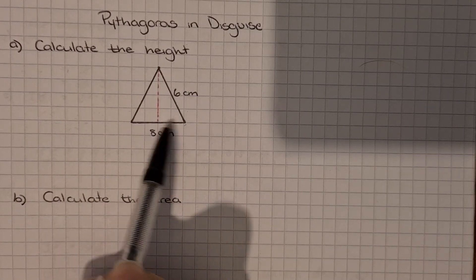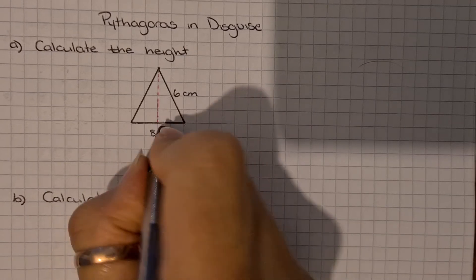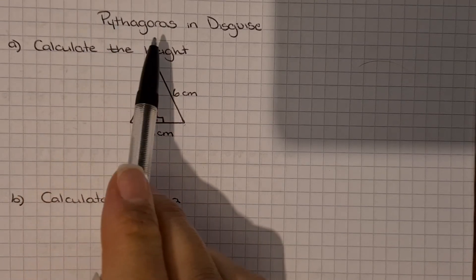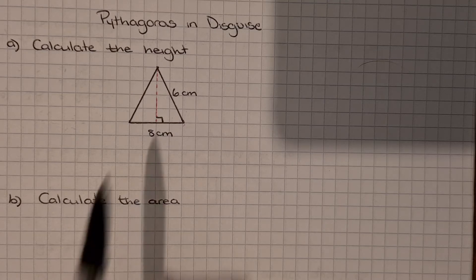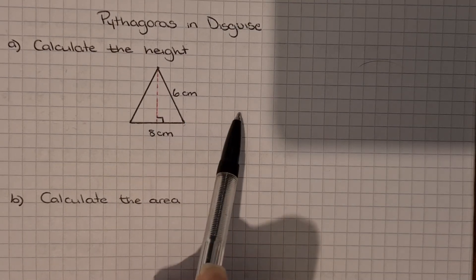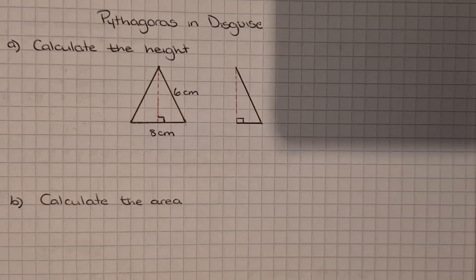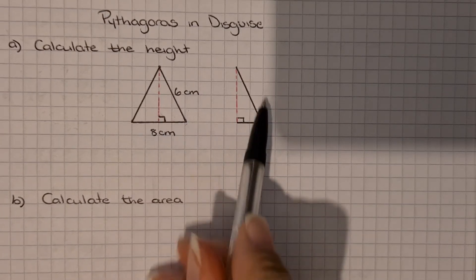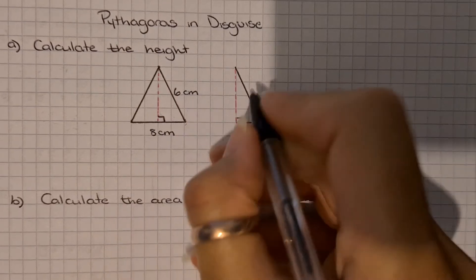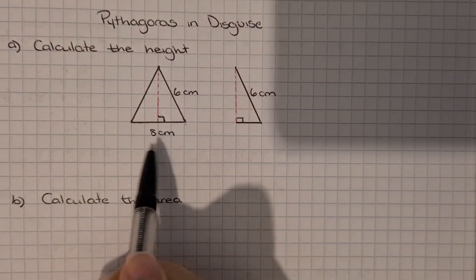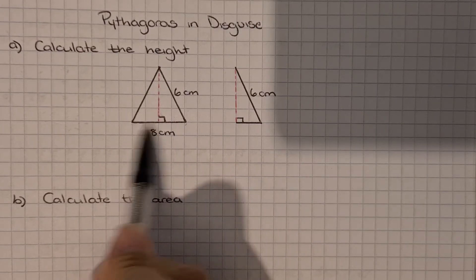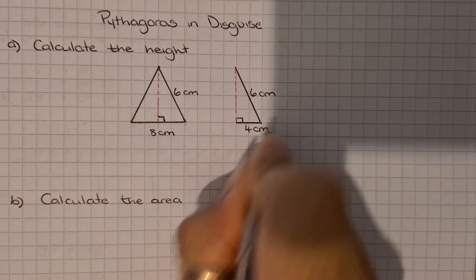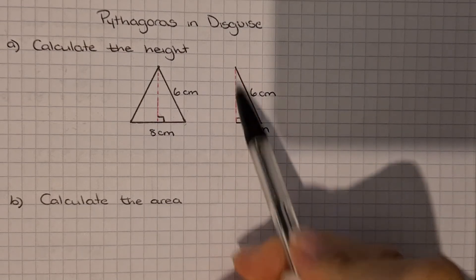Once I've drawn on the height, that creates two right angles — it creates two right angle triangles — and we know that Pythagoras can only be used with right angle triangles. So I'm going to draw this triangle over at the side. I've basically split the big one in half. The sloped side is 6 centimetres, and since we've halved the triangle the whole base was 8, so this part here must be 4 centimetres. We've been asked to calculate the height, which is the red line.